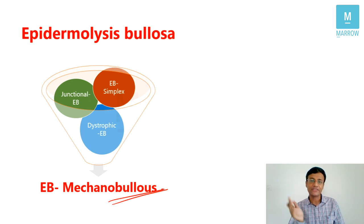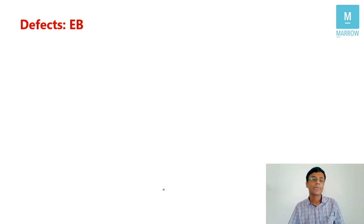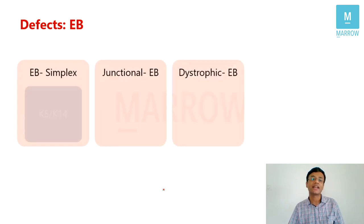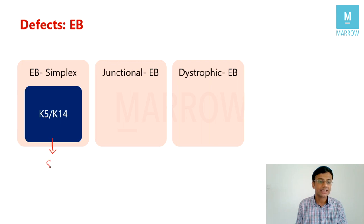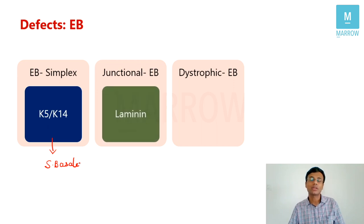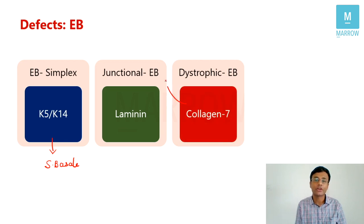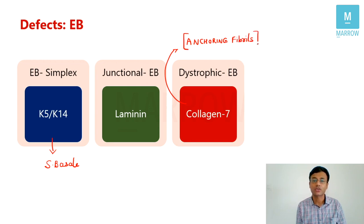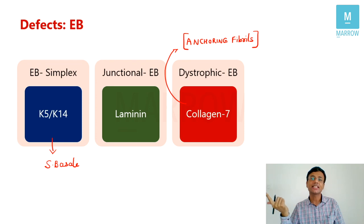The defects in the three types of epidermolysis bullosa: EB simplex involves keratin 5 and 14 (part of stratum basale); junctional EB involves laminin protein; and dystrophic EB involves collagen 7, which is a component of the anchoring fibrils at the dermo-epidermal junction. Remember these three important antigens.